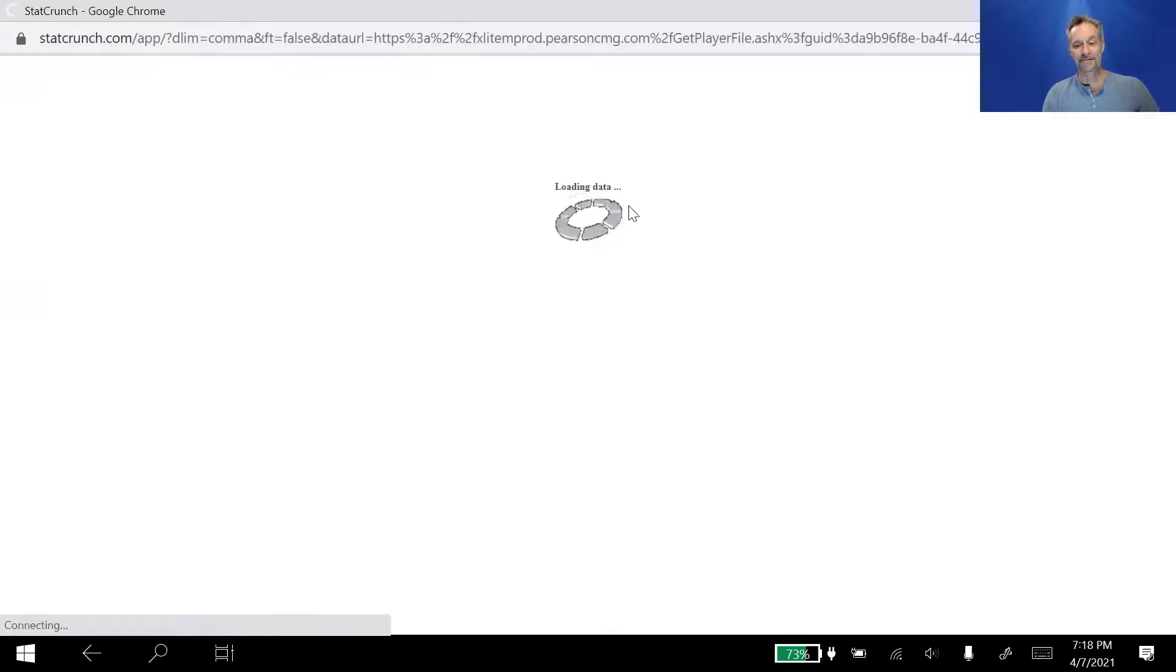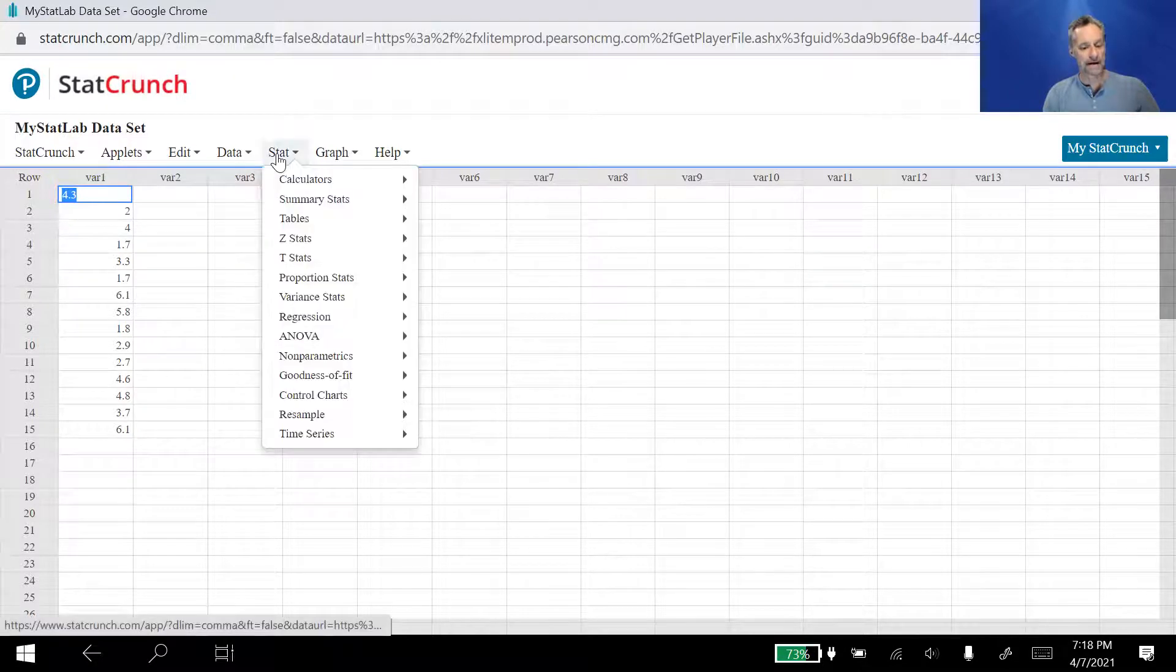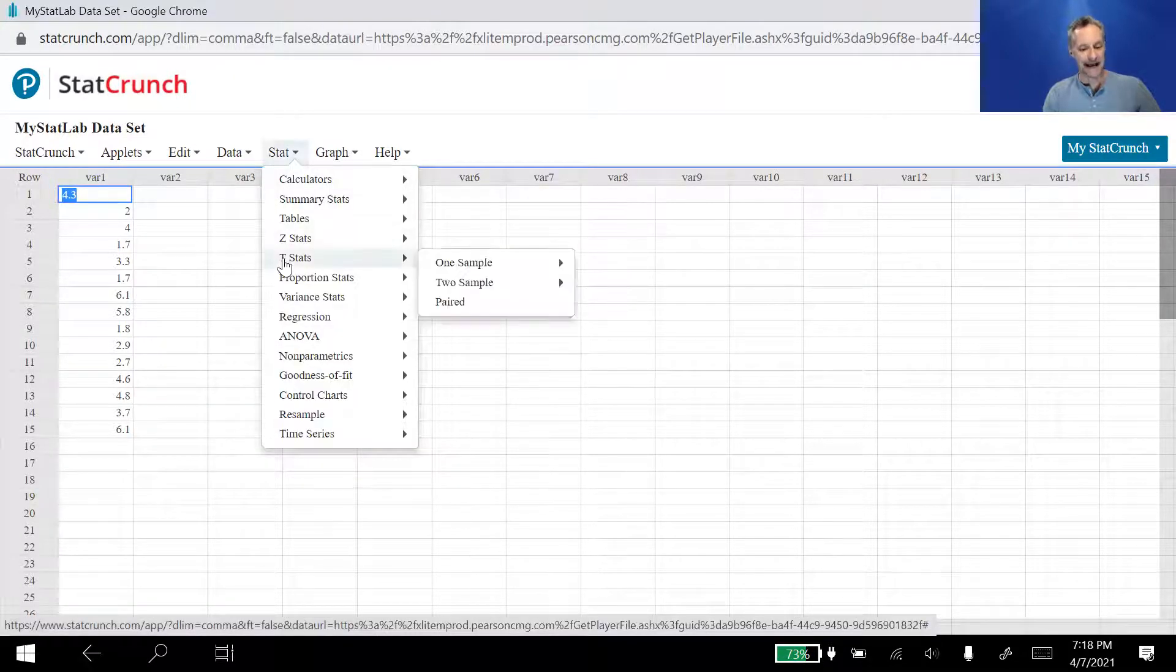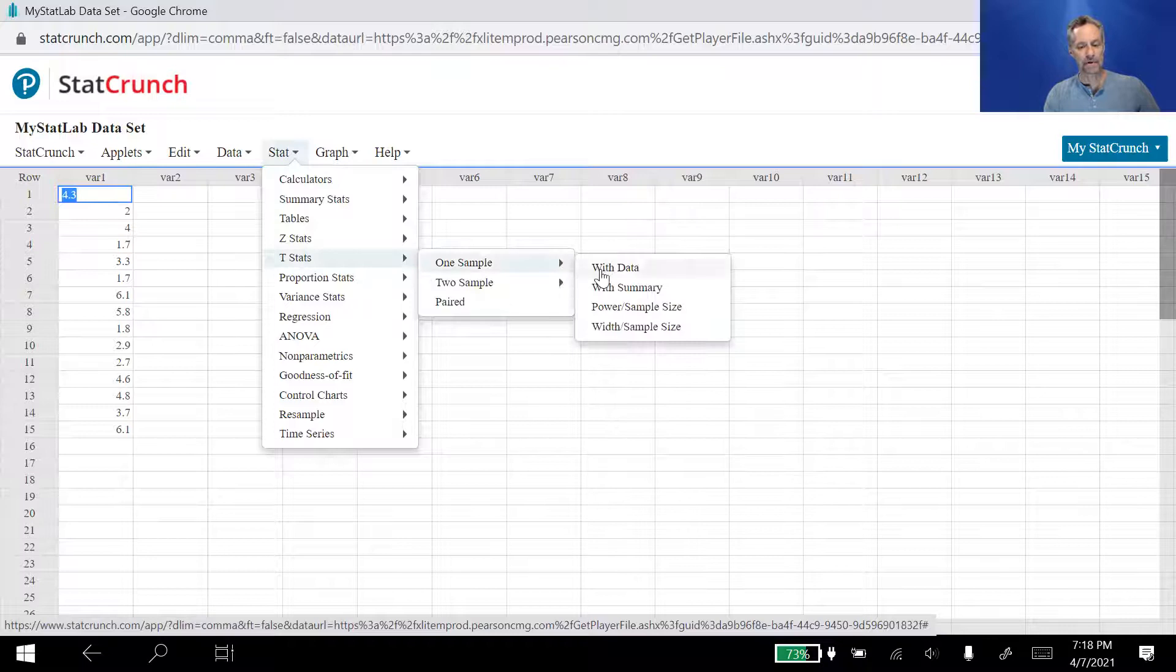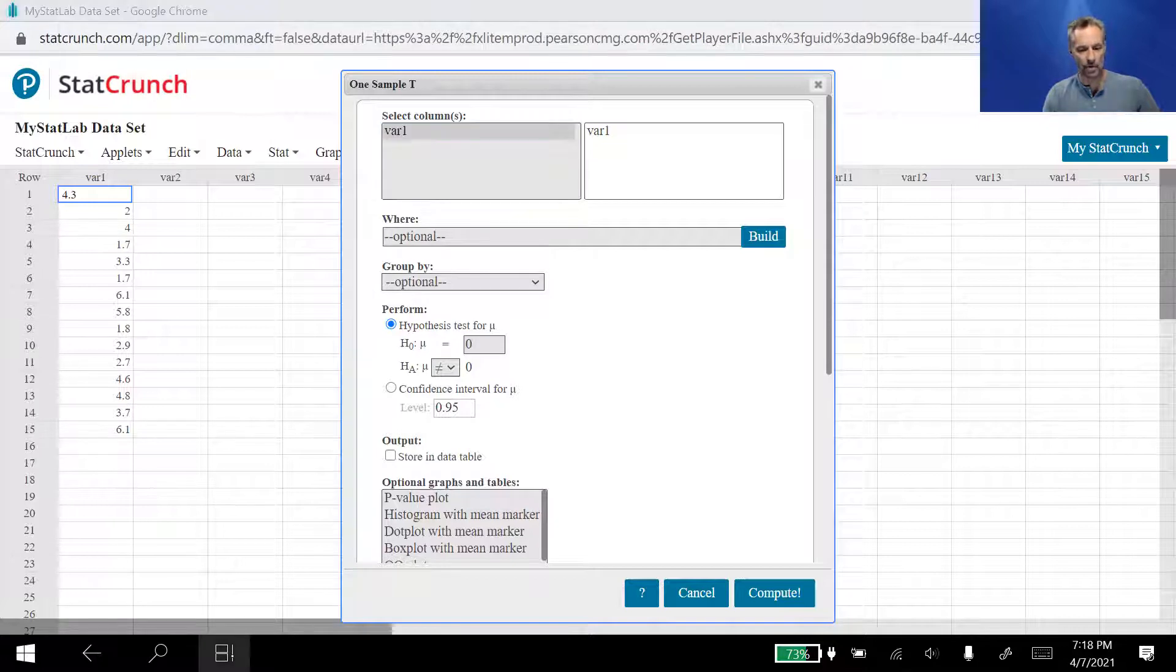So that all comes up for us. It's loading. It loads up all the data for us. All we do is we go stat, T stat, one sample with data. The data is in variable one. And then we do the null hypothesis. Since I forgot the null hypothesis, let's flip back to it and see what it was. Our null hypothesis was equal to 5.15 and then not equal to 5.15.